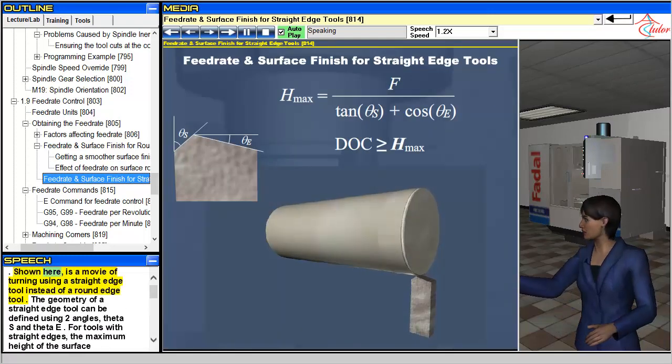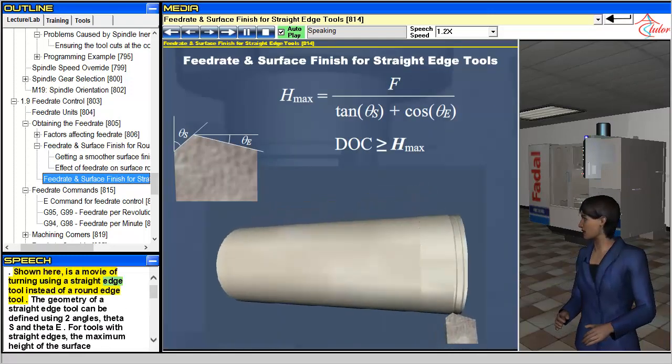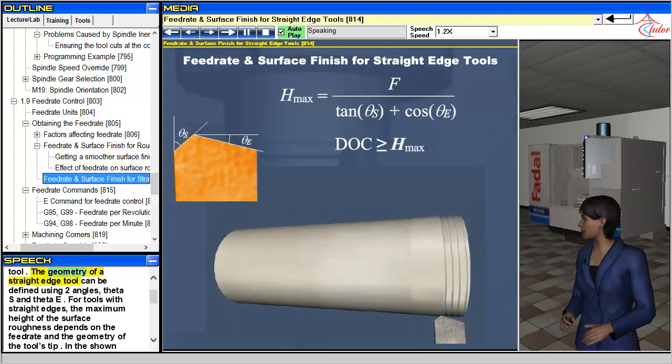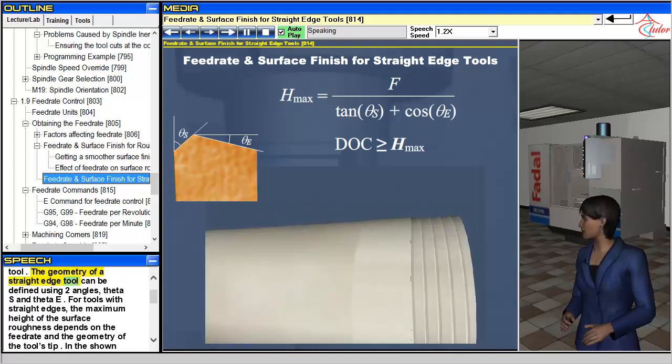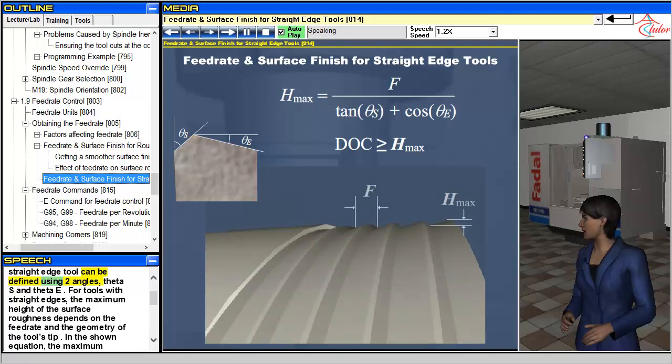Shown here is a movie of turning using a straight edge tool instead of a round edge tool. The geometry of a straight edge tool can be defined using two angles.